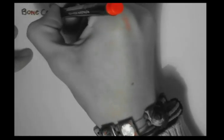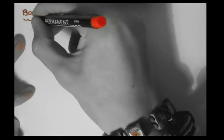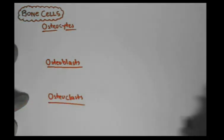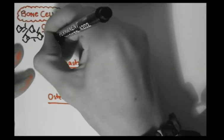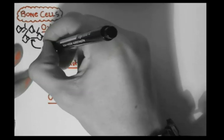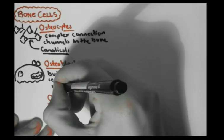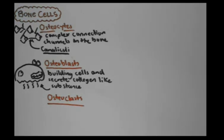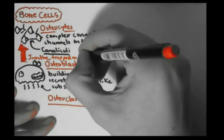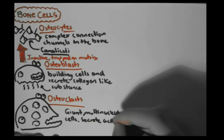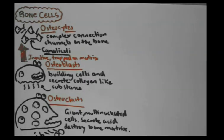There are three main bone cells, all beginning with 'osteo': osteocytes, osteoblasts, and osteoclasts. Osteocytes look like diamond-shaped cells connected to each other through complex channels known as canaliculi. Osteoblasts are the bone-building cells that secrete a collagen-like substance initiating new bone formation; if inactive or trapped in their own collagen matrix, they can become osteocytes. Osteoclasts are giant, multi-nucleated cells (averaging around 6 nuclei) that secrete acid, which destroys the bone matrix.